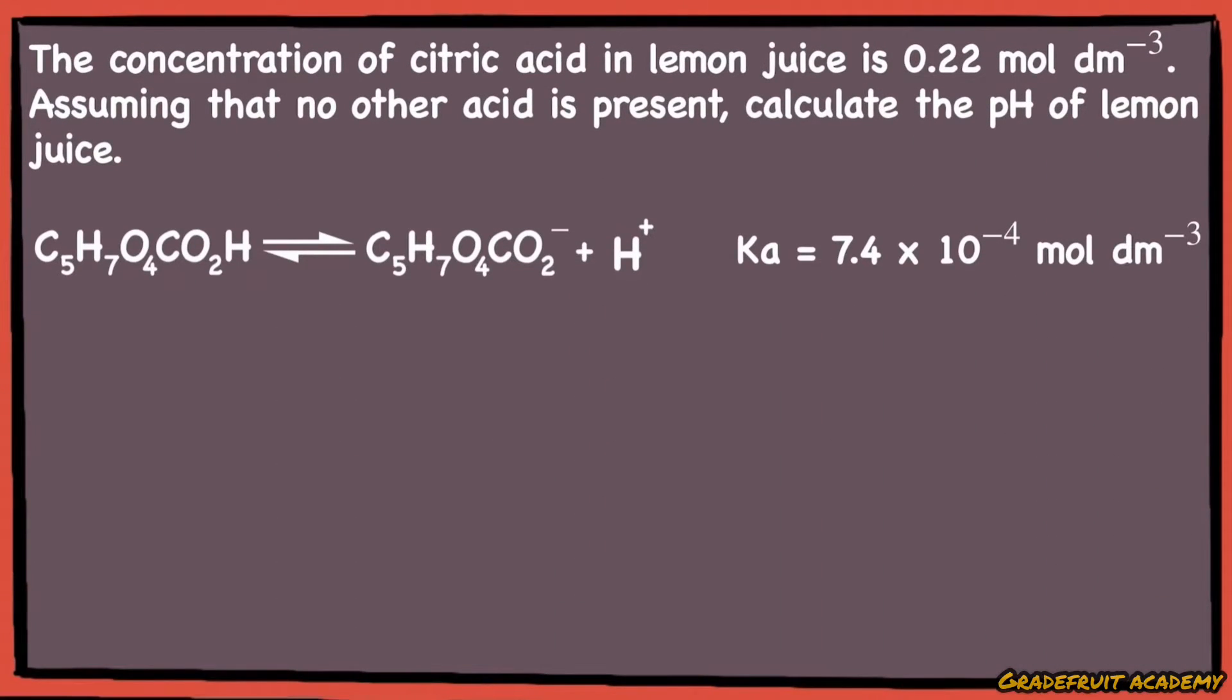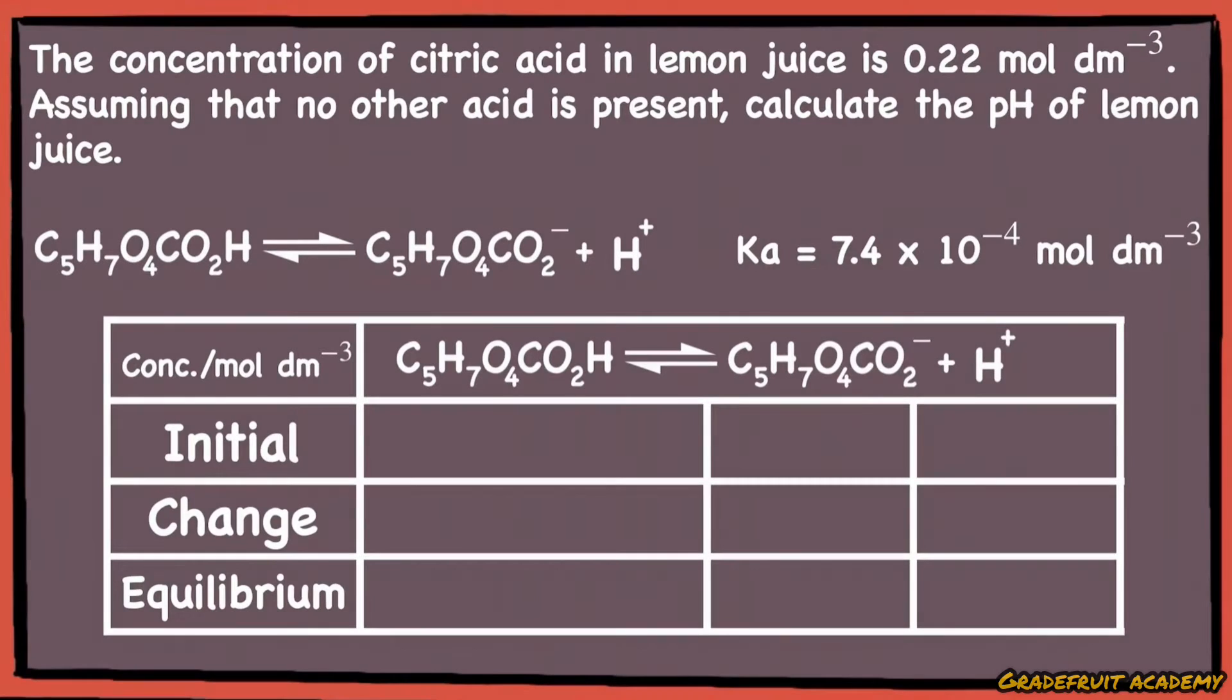Let's take a look at this question. Feel free to pause the video right now to digest it. From the reversible sign here, we can tell that citric acid is a weak acid. To find its pH, we'll first write the equation from the question, then draw the ICE table.